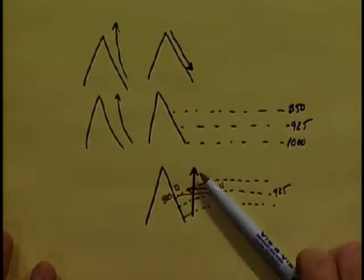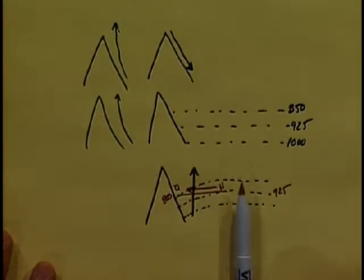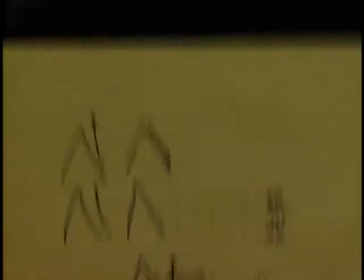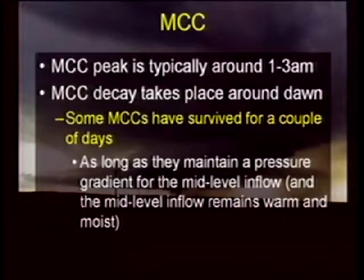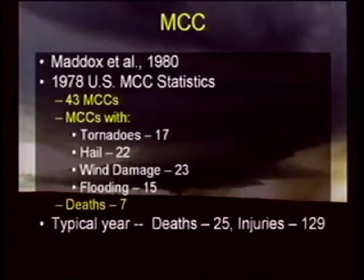This helps feed that complex of storms. With more cooling, the further away from the Rocky Mountains that low-level jet will migrate. Also, because we are cooling the Earth's surface at nighttime, we're getting a decoupling of the planetary boundary layer from the free atmosphere, which provides a nice smooth laminar surface for these wind vectors to flow along. So it's the development of the low-level jet in conjunction with the heating of the storms that helps provide this pressure gradient and feed these storms through the late evening and early morning hours. As long as they maintain a pressure gradient in the mid-level flow and the mid-level flow remains warm and moist, these things should sustain themselves for a while.